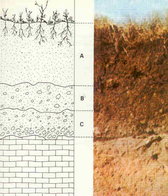Rammed earth consists of walls made from moist, sandy soil, or stabilized soil, which is tamped into form work. Walls are a minimum of 12 inches thick. Soils should contain about 30% clay and 70% sand.